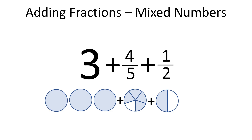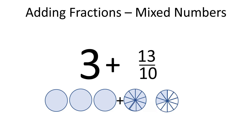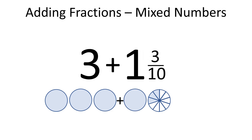Now we can add 4 fifths plus 1 second and add the result to 3. To add 4 fifths to 1 second, we first need to find the common denominator, which is 10. That way, we have 8 tenths plus 5 tenths, and 8 tenths plus 5 tenths equals 13 tenths. 13 tenths is an improper fraction. Watch our video on improper fractions to find out more. So 13 tenths is equal to 1 and 3 tenths, and 3 plus 1 and 3 tenths is equal to 4 and 3 tenths.